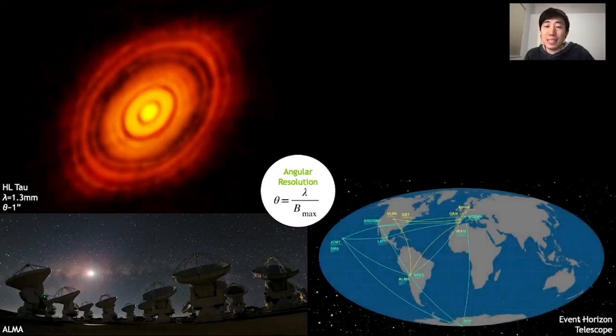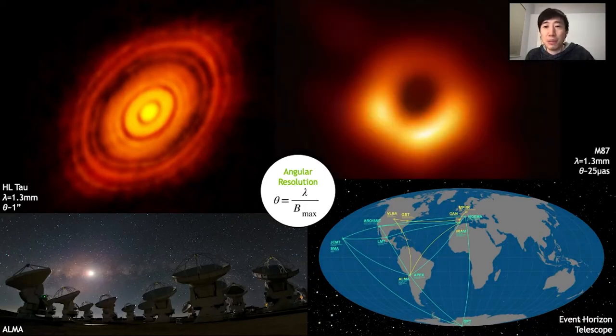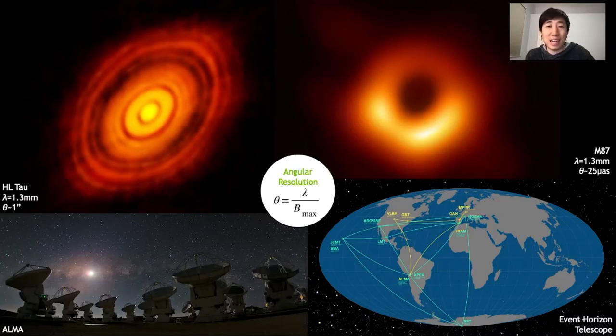And for the event horizon telescope our aperture becomes essentially as large as the earth allowing us to take this incredible image of a supermassive black hole at the center of a distant galaxy.